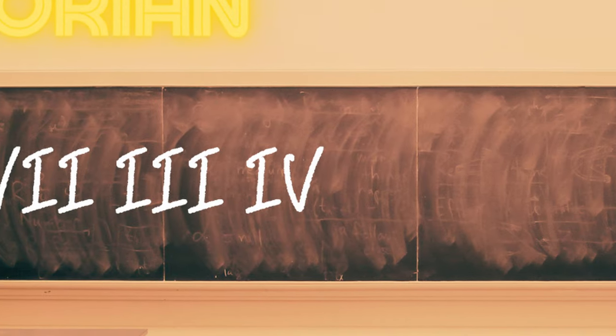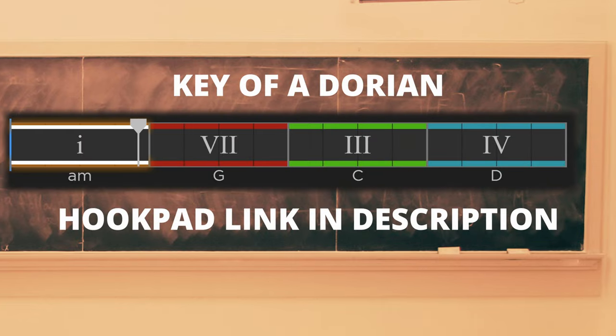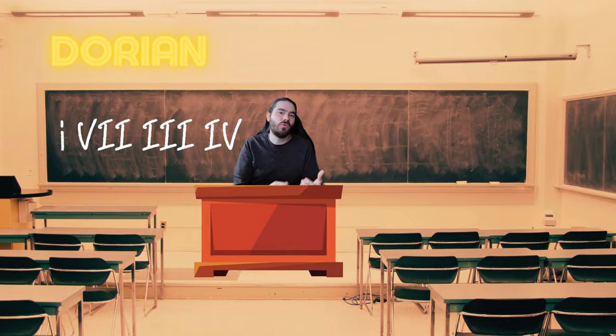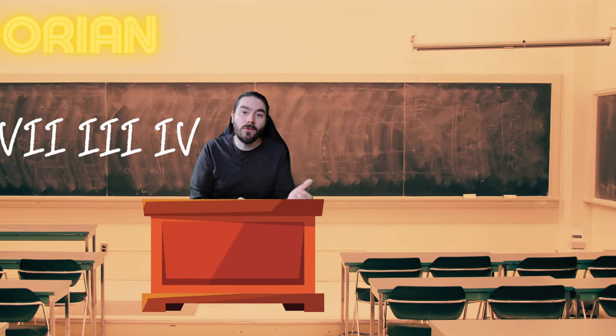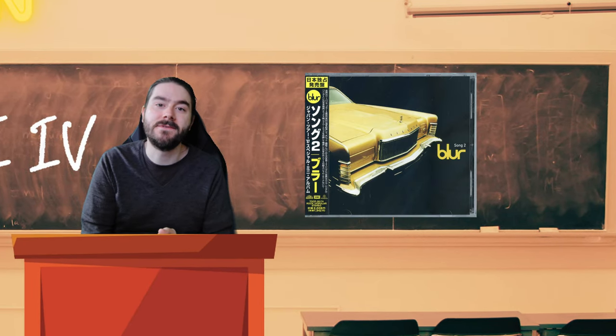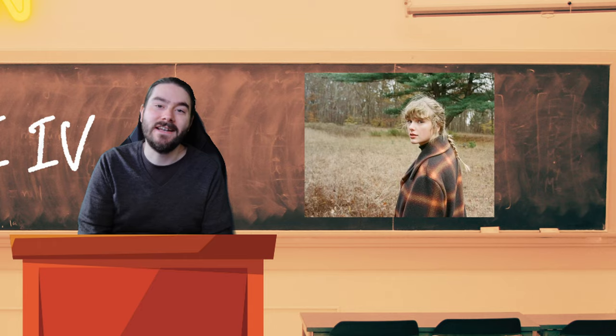The first chord progression I'll show you is 1-7-3-4. This is a great Dorian chord progression. It uses the 4 chord, which is excellent at providing a touch of trademark brightness to Dorian chord progressions. Examples that use this include Song 2 by Blur and Happiness by Taylor Swift.